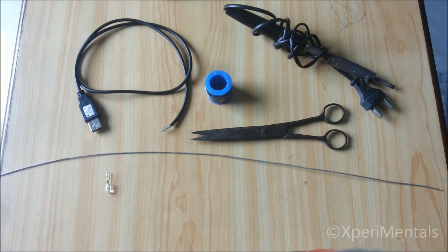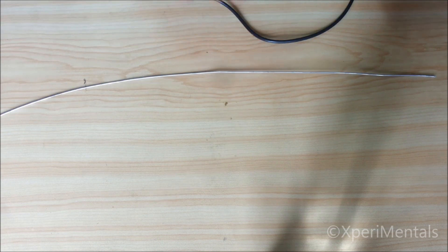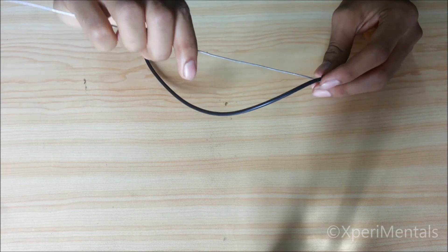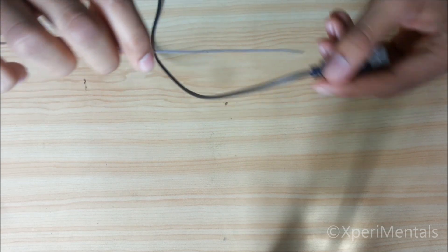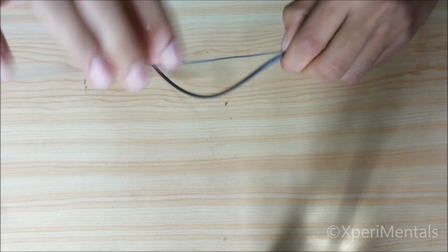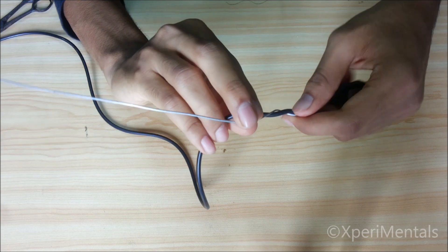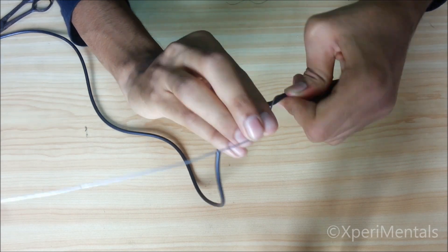First, take the thin aluminum wire and the USB cable. Now we have to coil this thin wire and USB cable together. Take it like this crossly and coil it. This thin wire is so soft to bend with your hands.